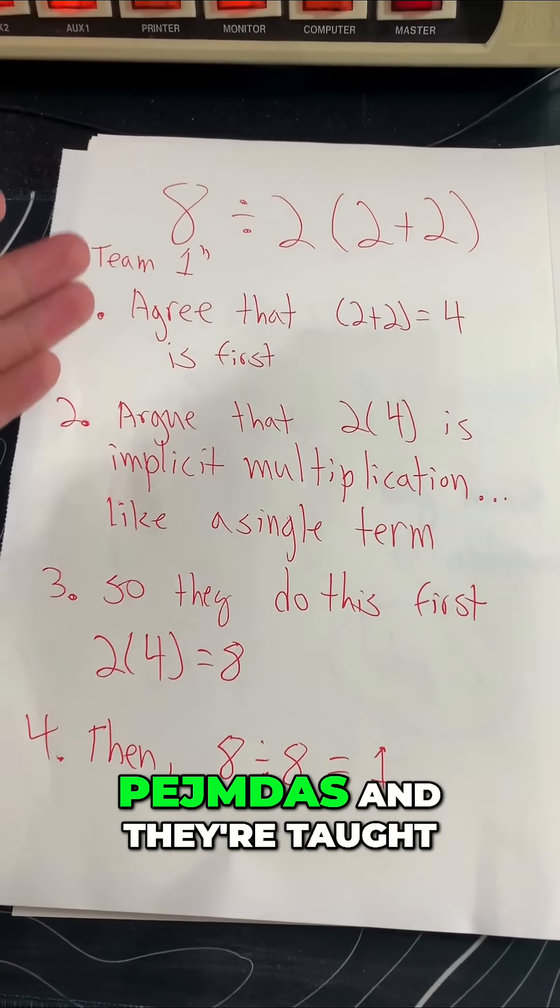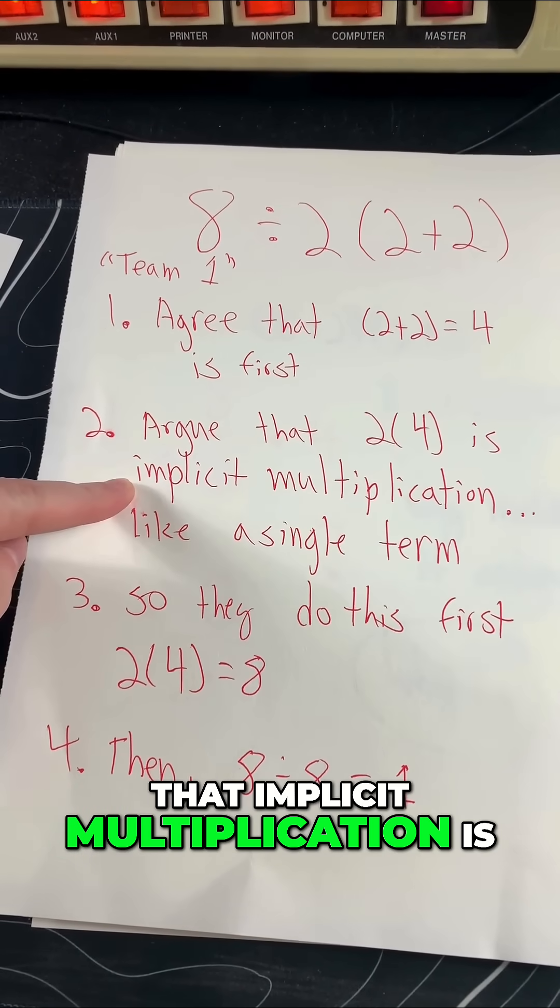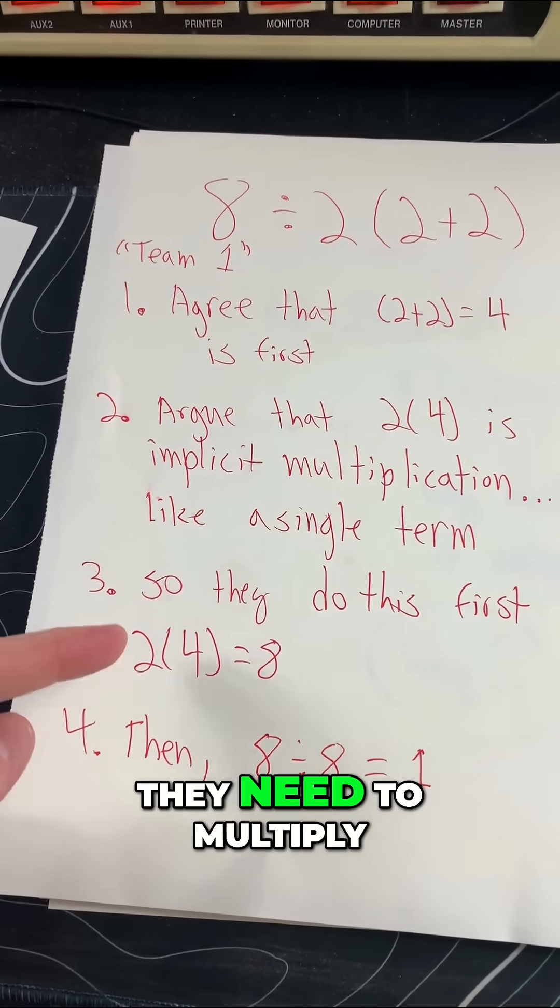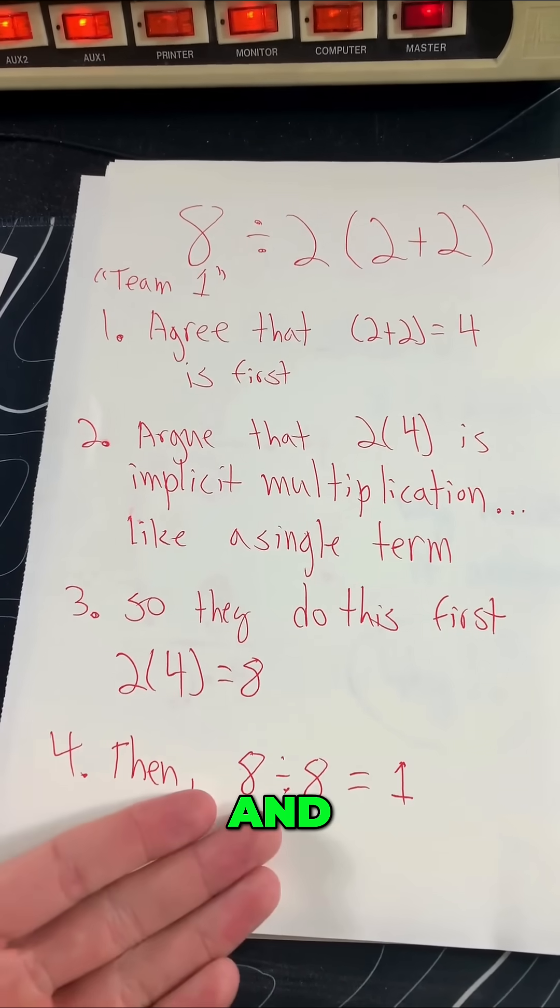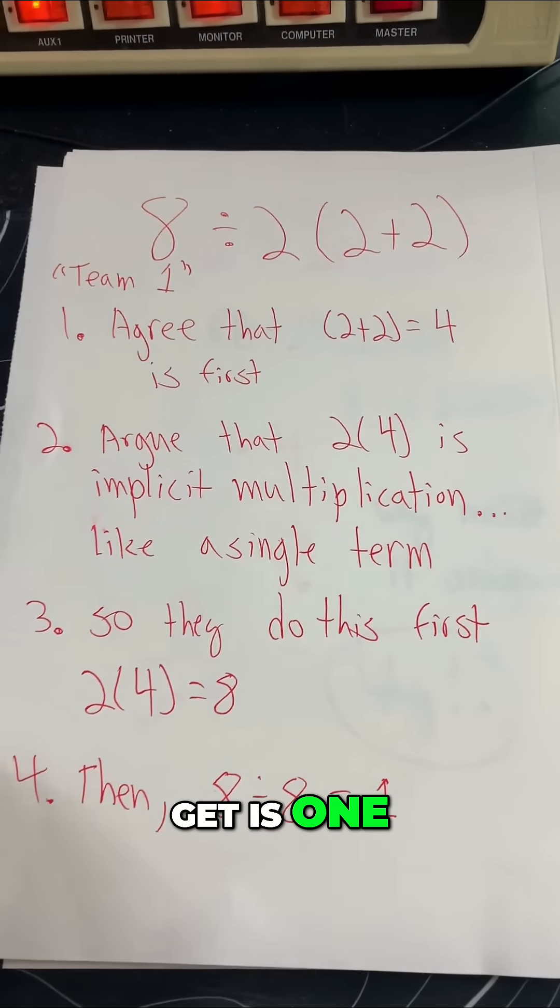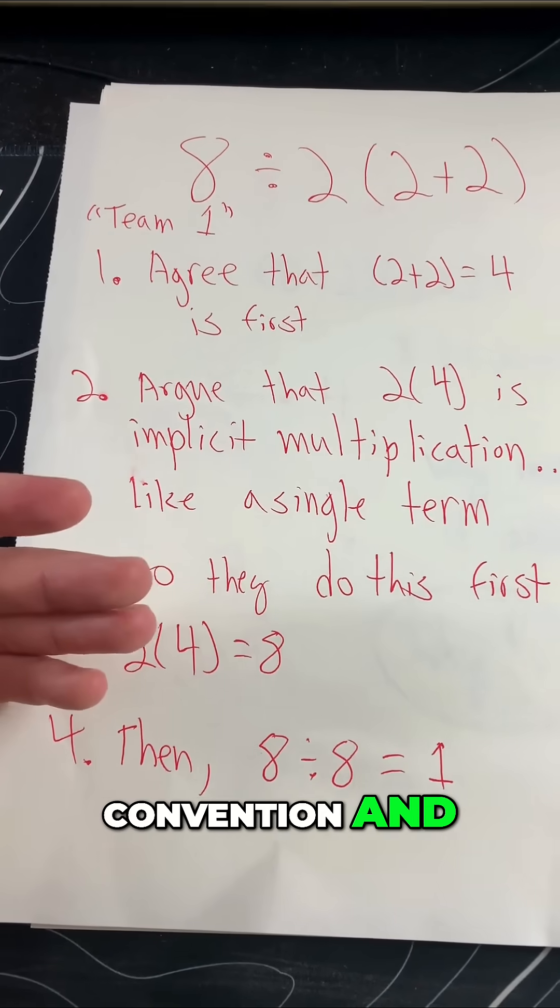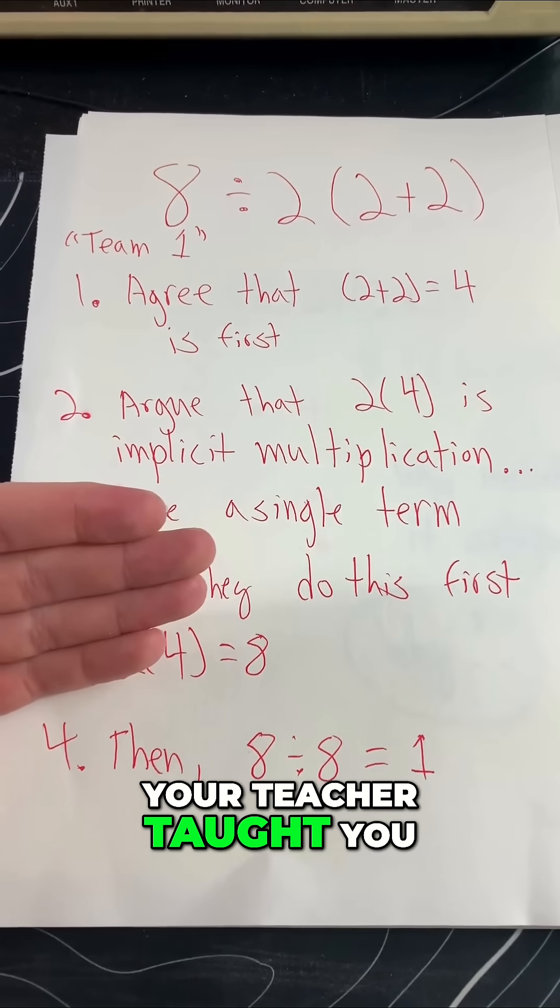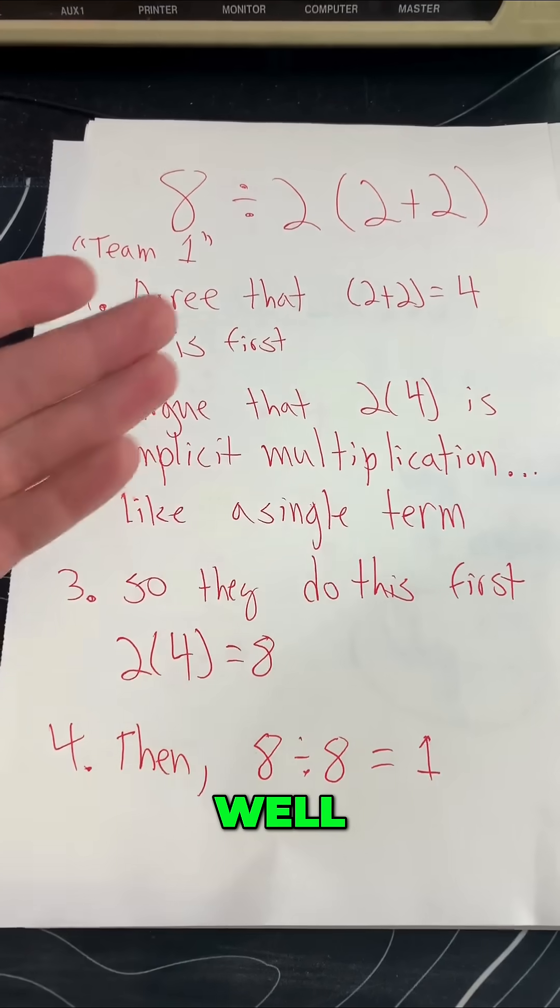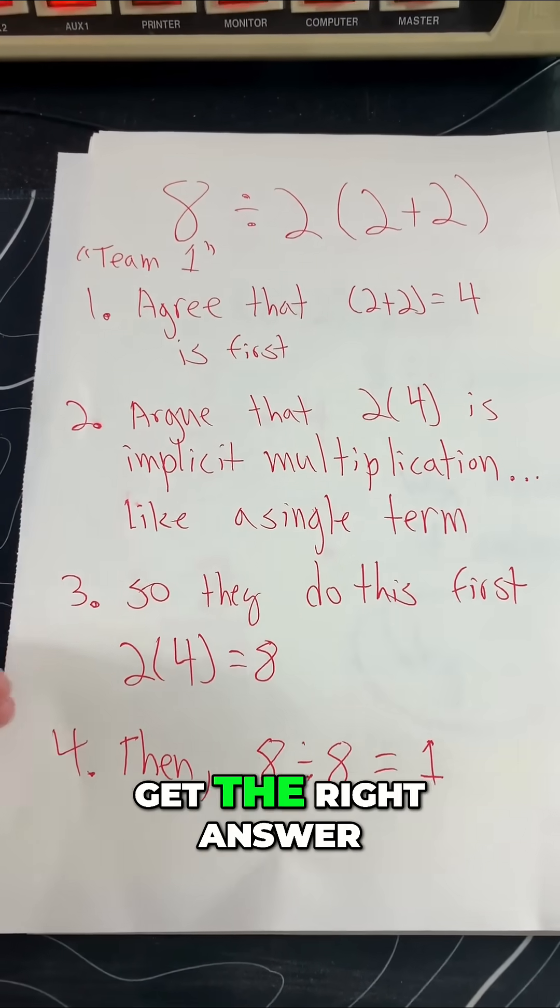Other people are taught PEMDAS, and they're taught that implicit multiplication is a single term, and they need to multiply this out first. So the answer they get is 1. This is an older convention, and if your teacher taught you this and then you saw it on a test, you'd know what they meant and you'd still get the right answer.